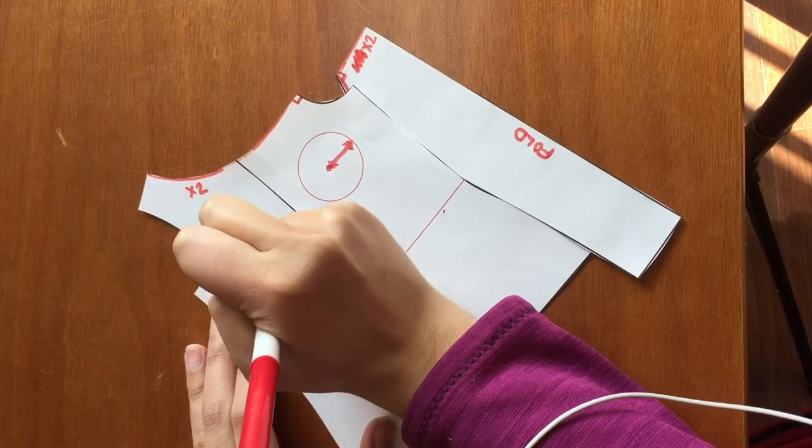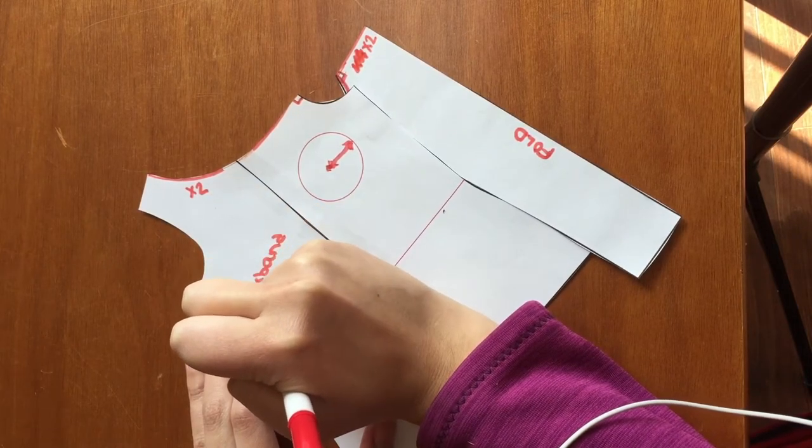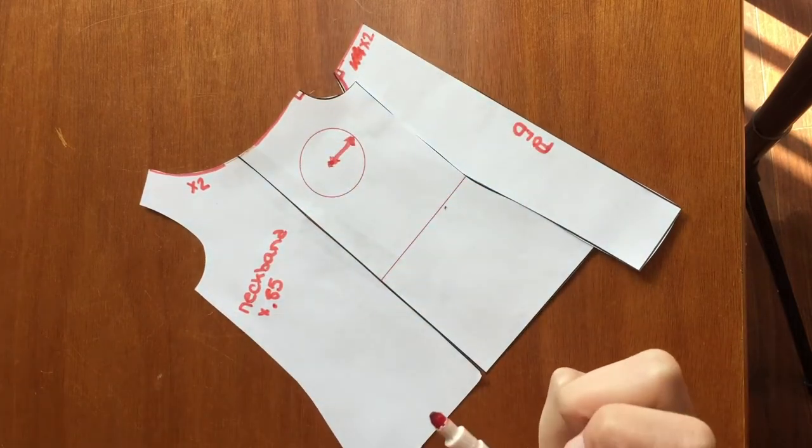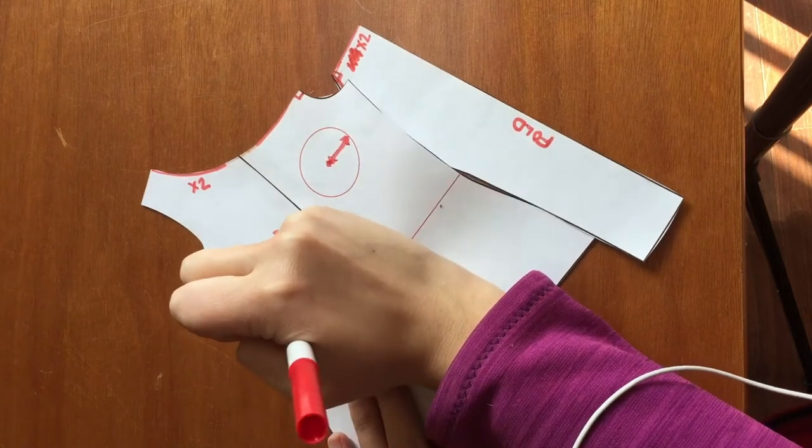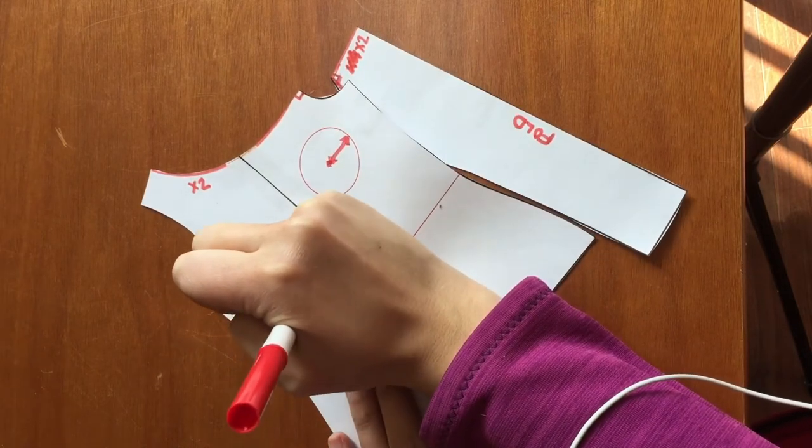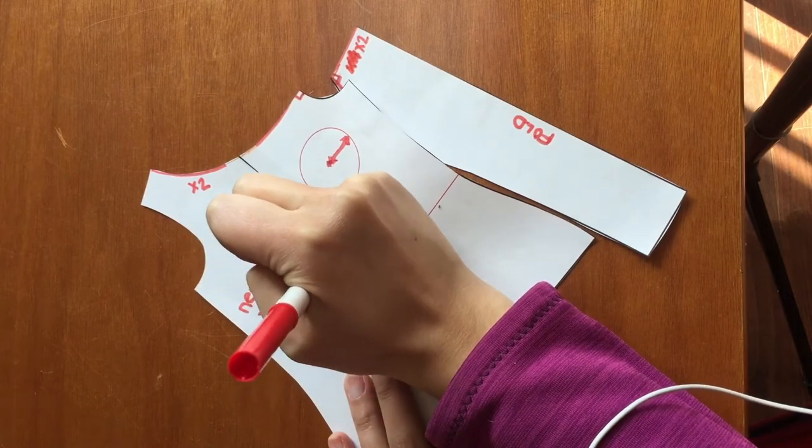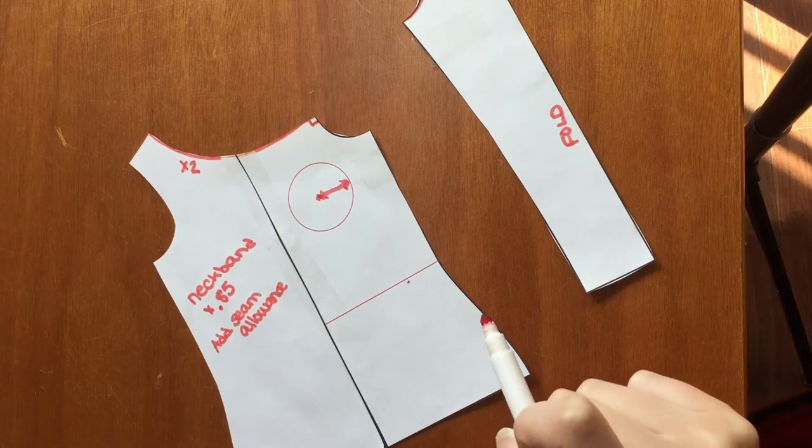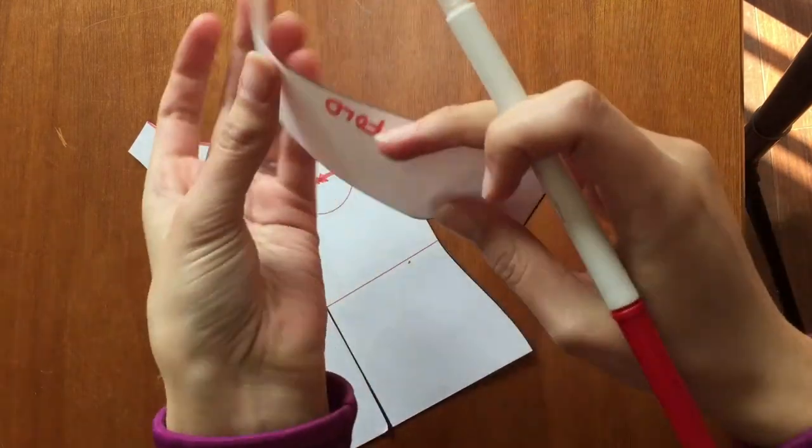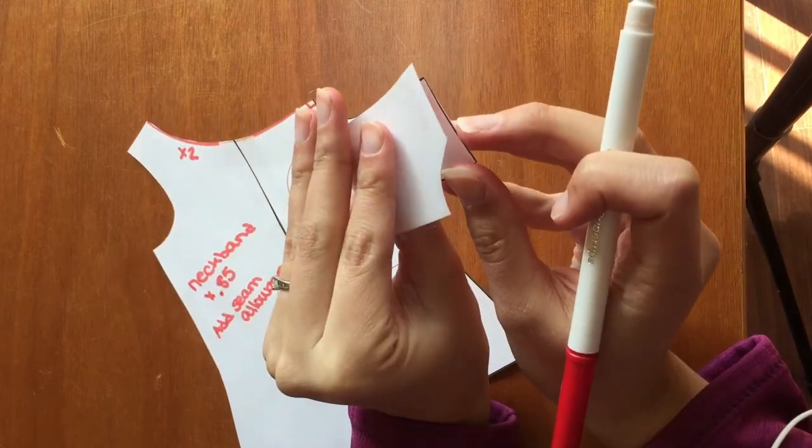And I like to multiply it by 0.85, which is 85%. And then you add your seam allowance. So if your seam allowance for the whole garment is three eighths of an inch, you're going to add 0.75 inches because you need seam allowance on either end for it to come together and stitch.